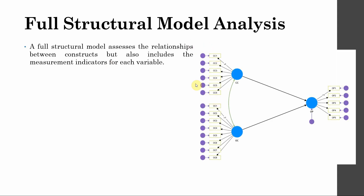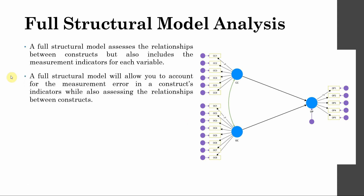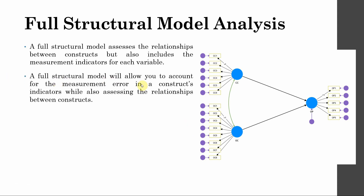The full structure model includes the indicators, the error terms, and the latent variables and how they are interrelated with each other. A full structure model will allow you to account for measurement error in your construct indicators while assessing the relationship between the latent variables.